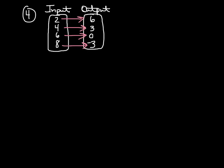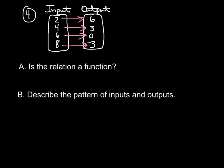In example 4, I want you to do two things. First part is A, is the relation a function? And B, describe the pattern of inputs and outputs. So pause the video and try this yourself. In A, is it a function? Each of your inputs goes to one output. So yes, it is a function.